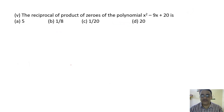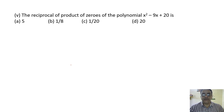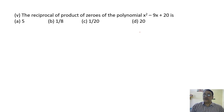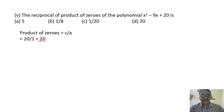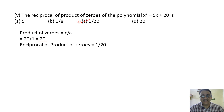The reciprocal of the product of zeros of a polynomial: first find the product using c by a. Here c is 20 and a is 1, so product is 20. The reciprocal is 1 by 20. Correct option is C.